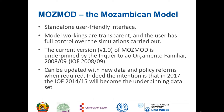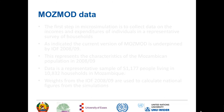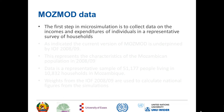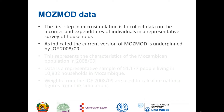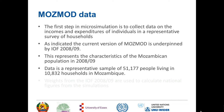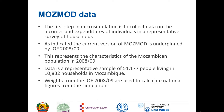The intention is that during this year the EOF 2014–15 will become the underpinning dataset. The first step is to select and prepare an appropriate micro data set — one with information on incomes and expenditures of individuals in a representative survey of households. The current version of MOSMOD is underpinned by the EOF 2008–9, which represents the characteristics of the Mozambican population in that year. The data is a representative sample of 51,177 people living in 10,832 households in Mozambique, and the weights from that survey are used to calculate national figures from the simulations.